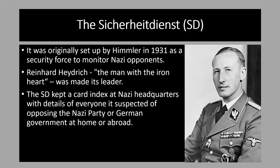The SD, or security force, was actually formed in 1931 by Himmler to be a security force for the Nazi party, to monitor its opponents. He made Reinhard Heydrich its leader — Hitler himself called him 'the man with the iron heart,' which shows just how dangerous this man was. Heydrich would eventually be involved in deciding on the policy of the Holocaust. The SD kept a card index with details of everyone it suspected of opposing the German government at home or abroad, and these records were kept not at government buildings but at Nazi headquarters in Munich.